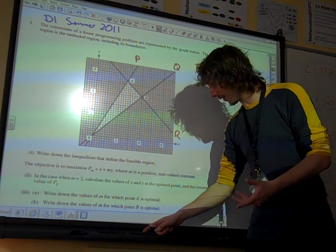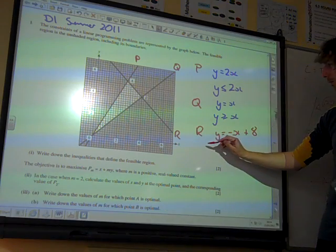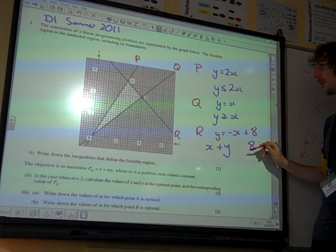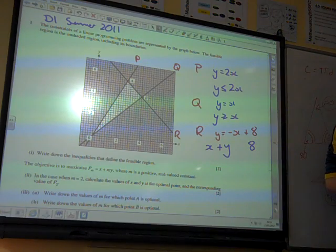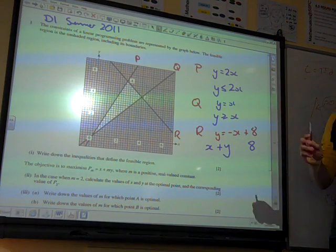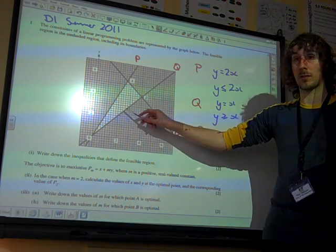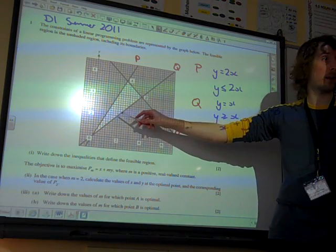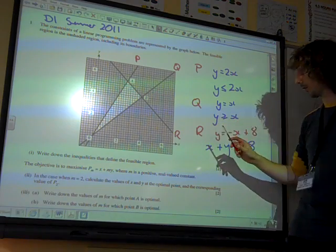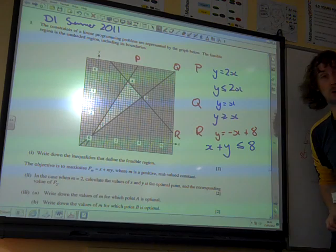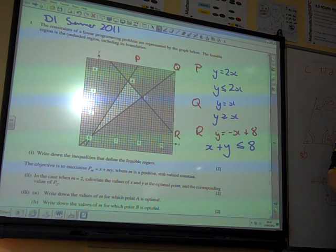When we've got y and x and a number in our inequalities, we normally write them as x plus y and we've got 8 over there. Which side are we shading of this? We're accepting, for example, the point 2, 2. That's on the accept side of that line. x plus y is 4, which is less than 8. So we must be accepting the points that are less than or equal to 8. And they are our three inequalities.